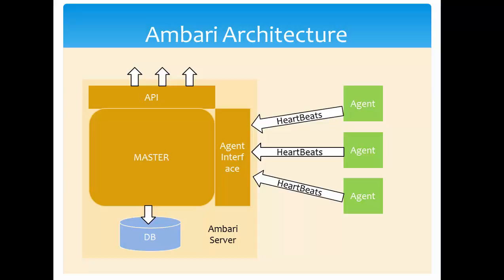Now let's look at the Ambari architecture overview. We will not go into full detail today but cover the basics. The Ambari architecture has various components: it has the Ambari server and Ambari agents. The Ambari server consists of master services, APIs, and an agent interface. Ambari agents communicate with the Ambari server via the agent interface. The Ambari server also maintains its own database for metadata. APIs are also exposed externally so others can use and extend Ambari's functionality.